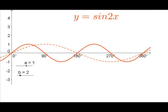Next we change the B to 2. We can see here it does two full circles between zero degrees and 360 degrees. In the background is the dotted line where A and B still equal 1, so you can see the difference.